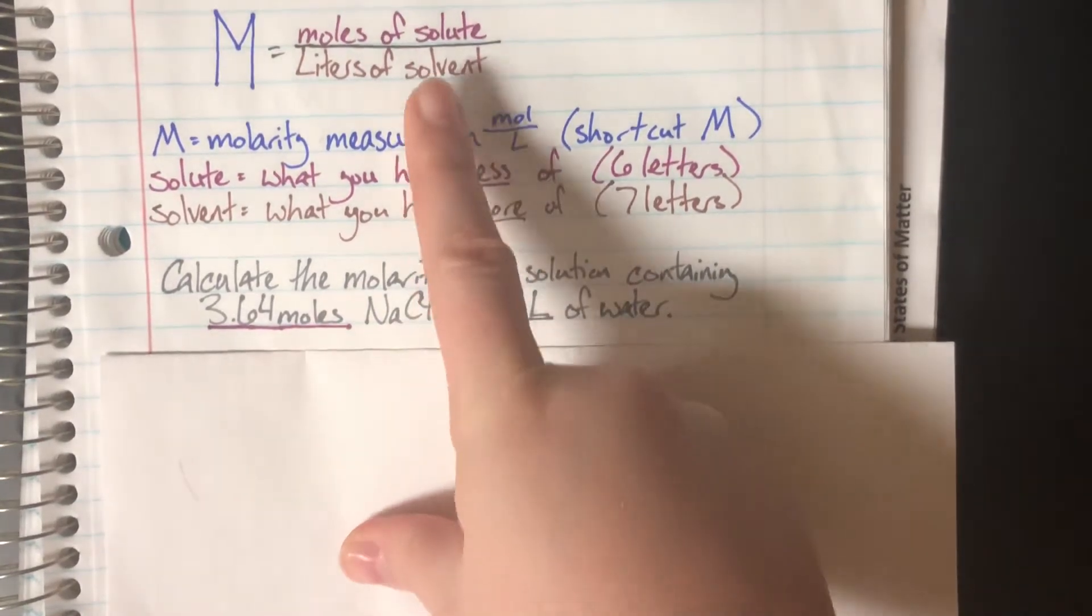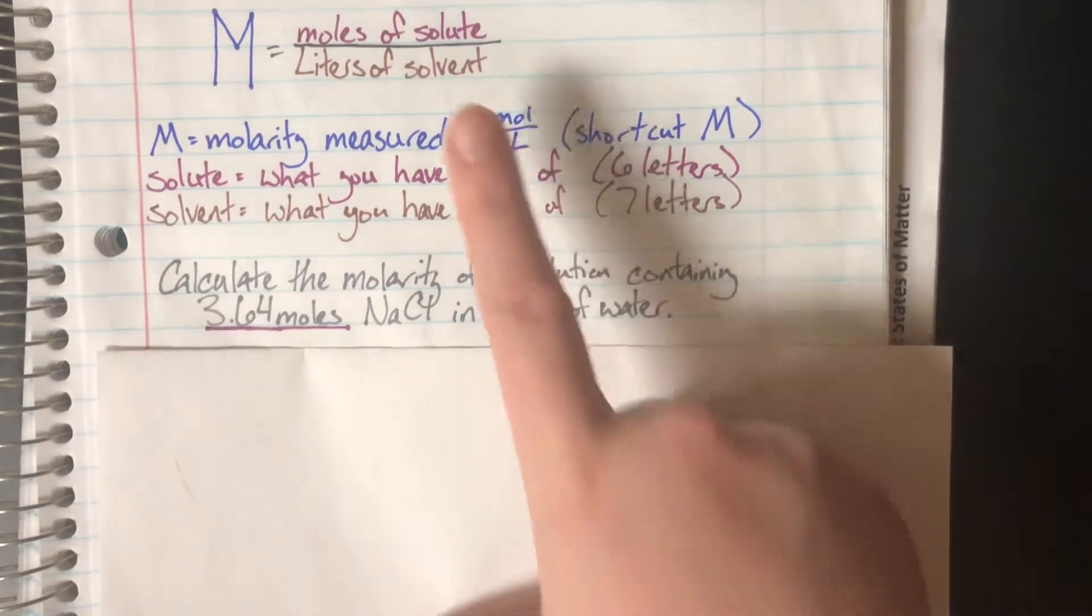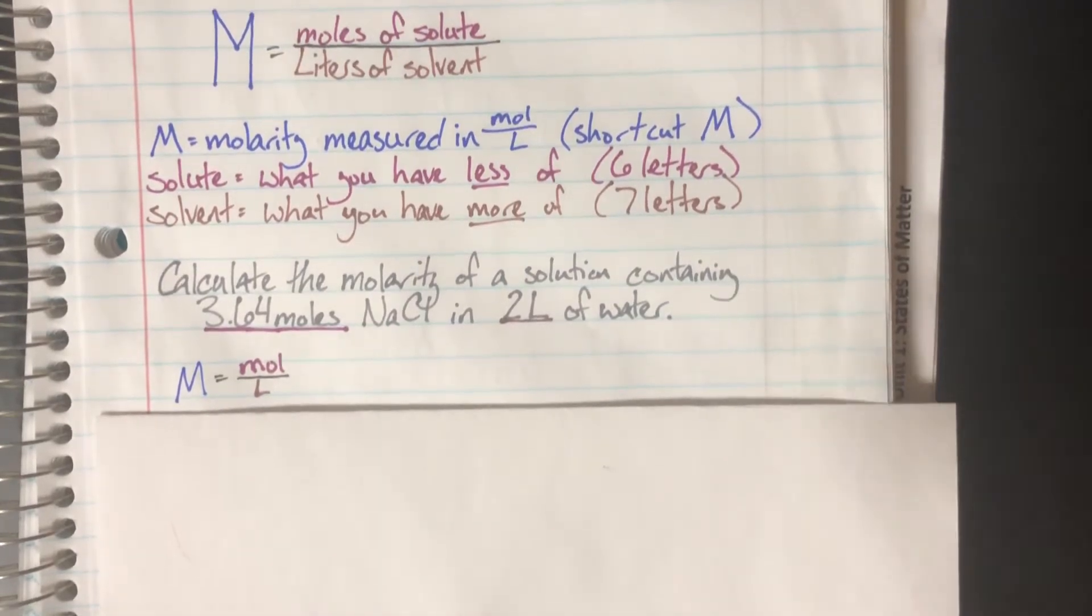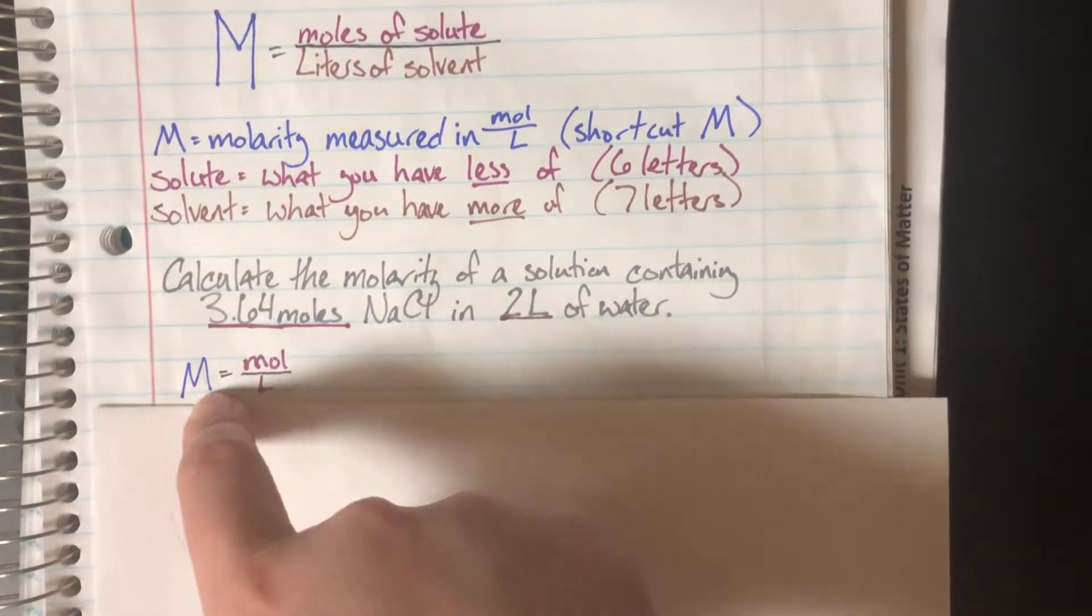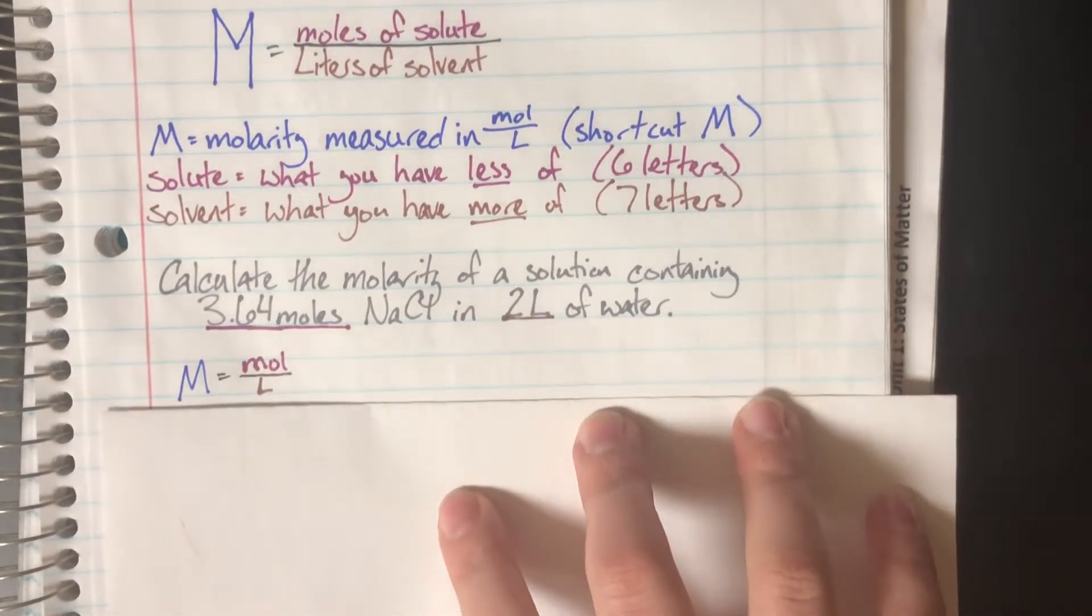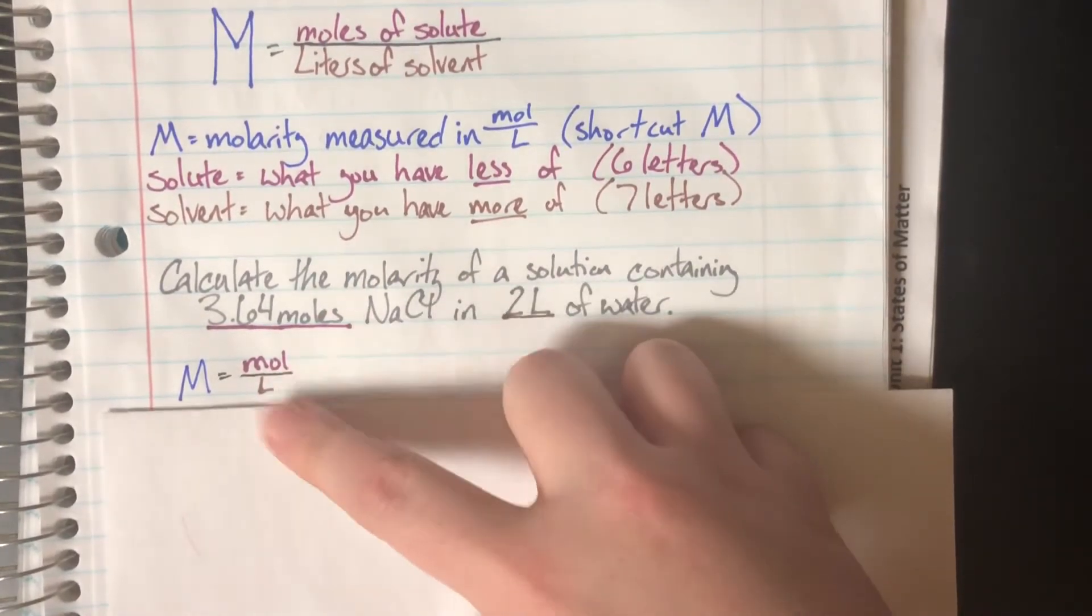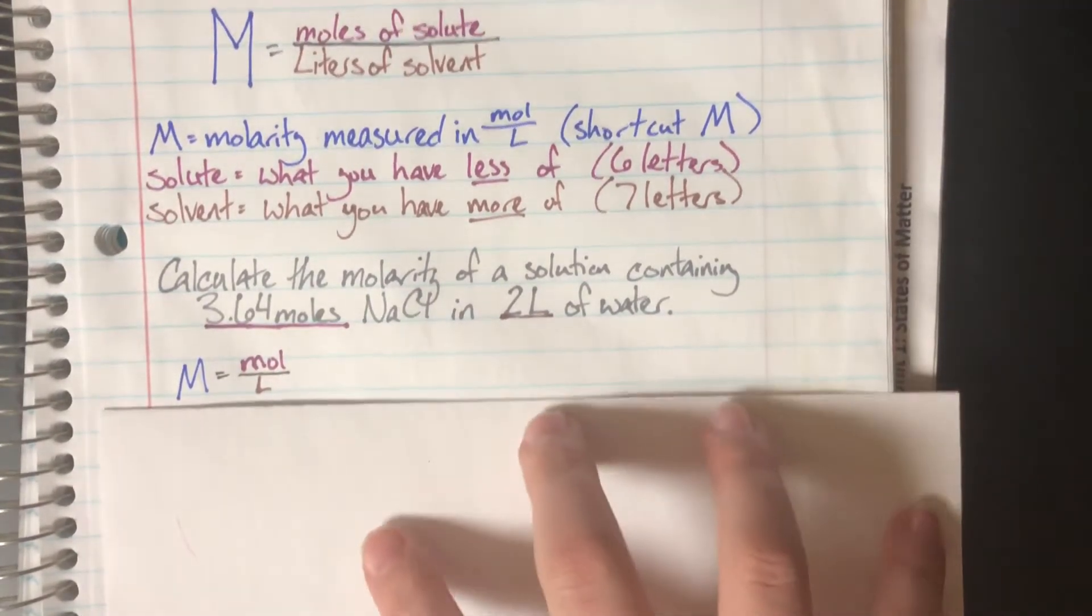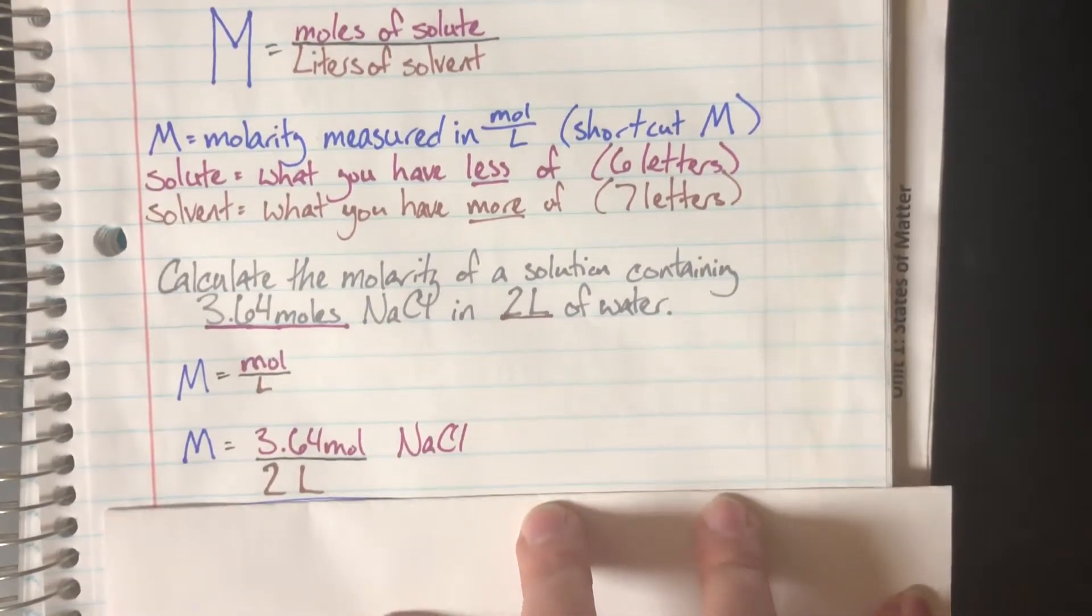I see moles, which is what solute is measured in, and liters, which is what solvent is measured in. I can plug these into my molarity equation. Since I'm solving for molarity and the equation is already solved for molarity, I don't need to rearrange it. I underlined everything in the problem with colors corresponding to each part of the equation, making it easier to plug in the values.